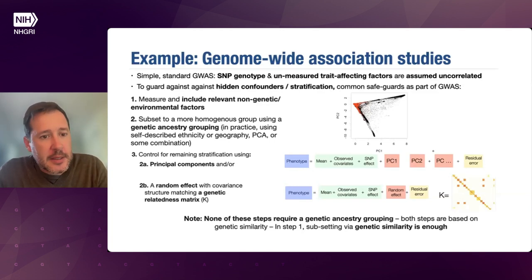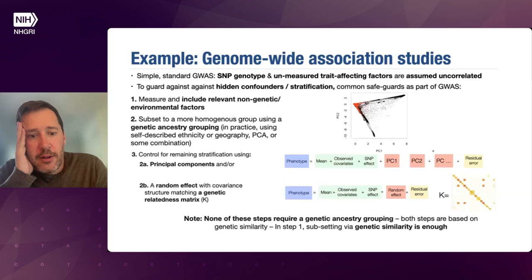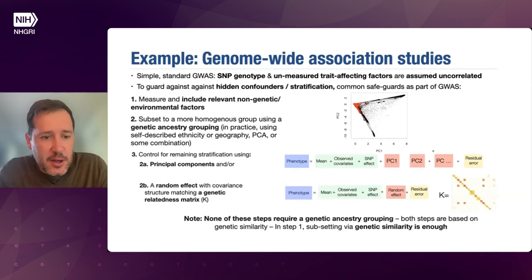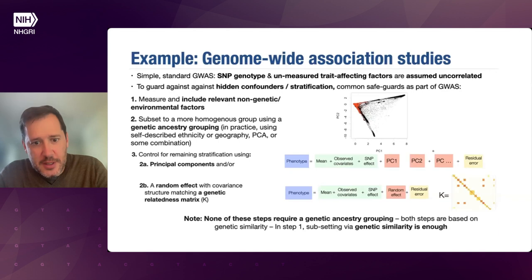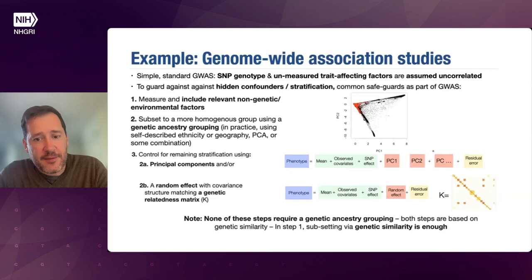The principal components, as one example, can be included in the linear model. Or another approach is to use a random effect where you add a term that has a pre-specified covariance structure, typically given by a genetic relatedness matrix. With these approaches, you don't really require the genetic ancestry groups in the sense of defining a group based on a self-described ethnicity, identity, or a mashup of genetics and ethnicity.